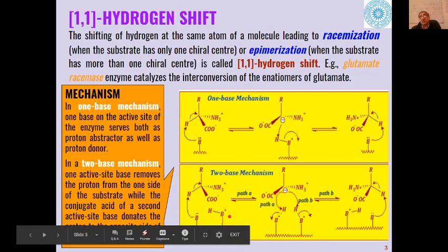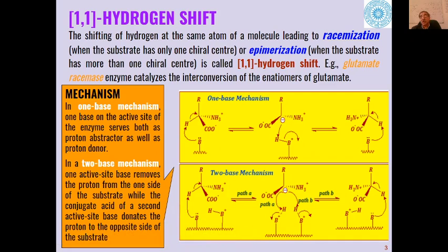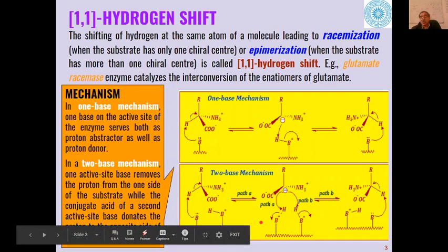There is also the possibility that the mechanism follows a two-base mechanism, where the active site of the enzyme has two active residues: one acting as a base and the other acting as an acid. One abstracts the proton while the other donates a proton, giving the racemic product.